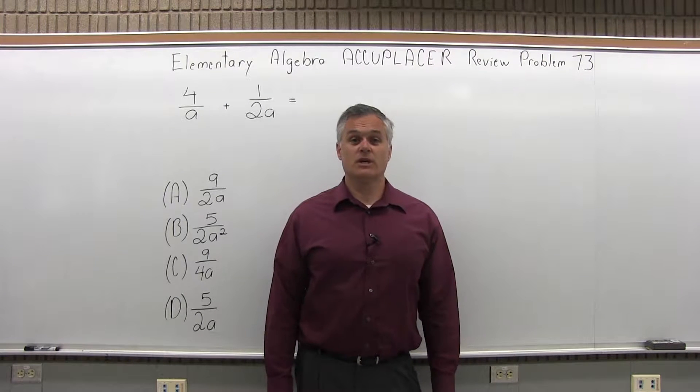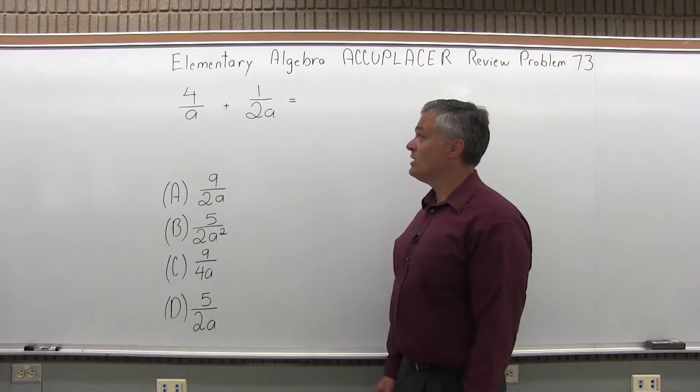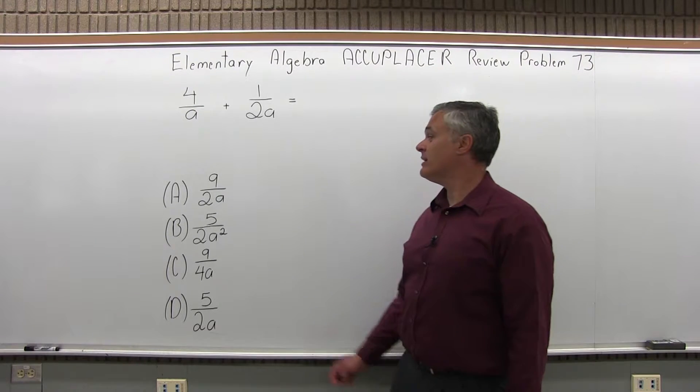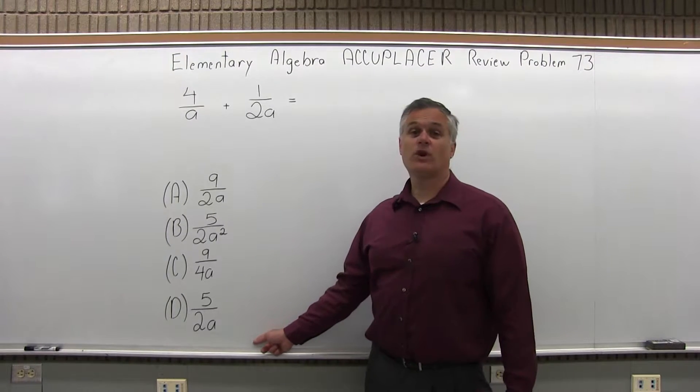This is the Elementary Algebra Accuplacer Review, Problem 73. We have 4A plus 1 over 2A equals which one of the four following options?